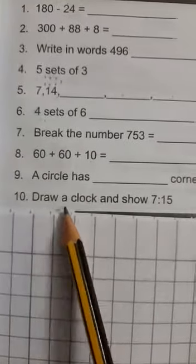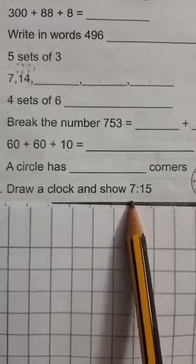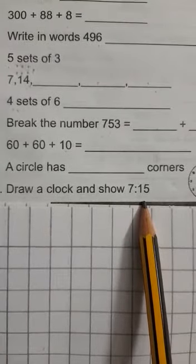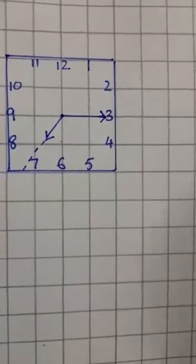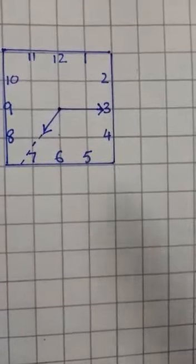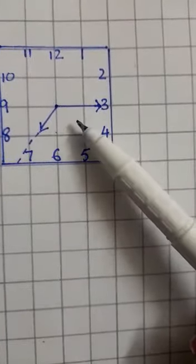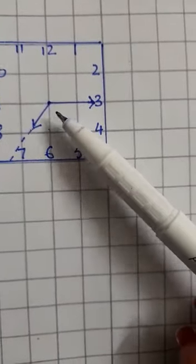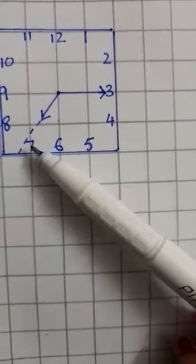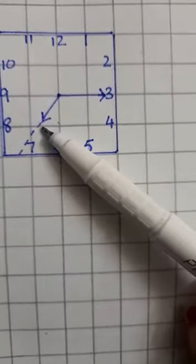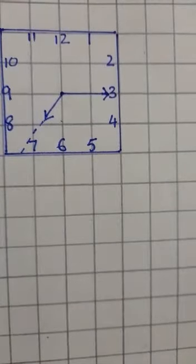Question number ten: draw a clock and show seven fifteen — it is quarter past seven. So we will draw a clock. The big arm is on three, exactly on three. And the small arm is a bit forward from seven, in one block. Like this you have to draw.